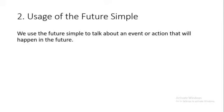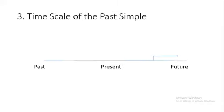Then we will talk about the usage of the future simple. We use the future simple to talk about an event or action that will happen in the future — نتكلم عن حدث أو فعل رح يصير بالمستقبل. If we look at the time scale, the action starts in the present but it is all about the future — الحدث نتكلم عنه بالحاضر لكن هو رح يحصل بالمستقبل.